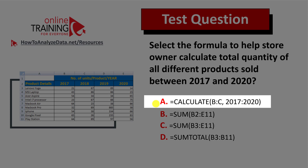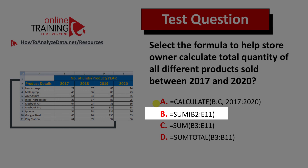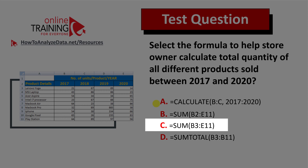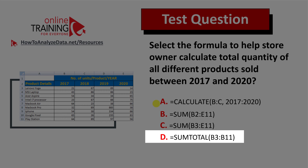Choice A is a calculate formula with populated parameters. Choice B is a SUM formula. Choice C is another version of a SUM formula. And choice D is a SUMTOTAL formula.